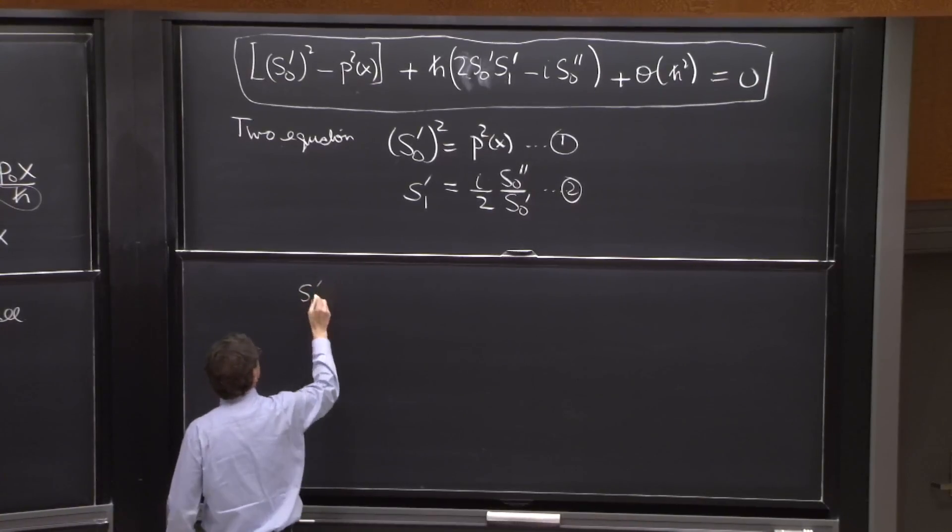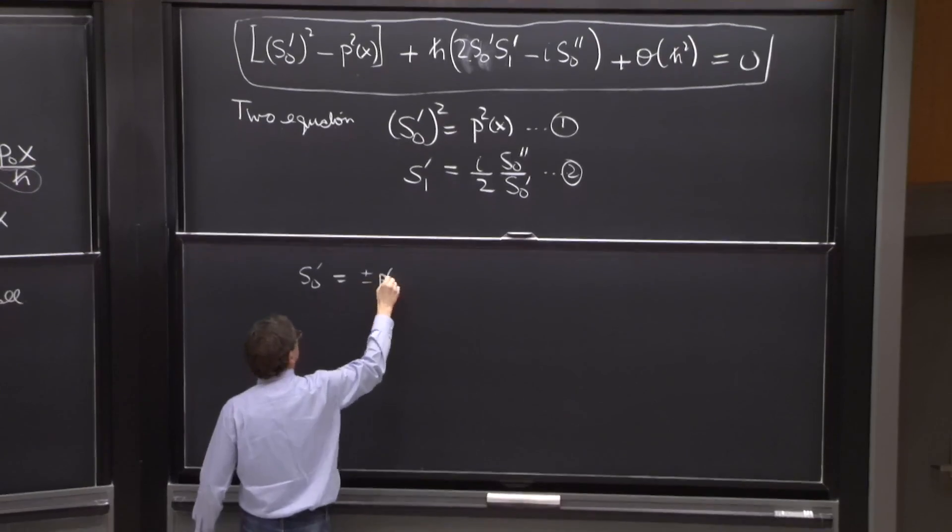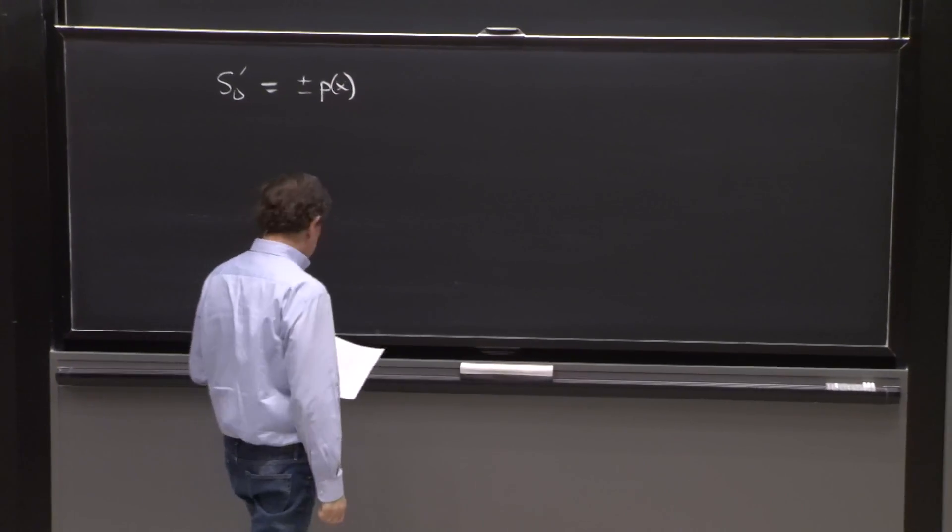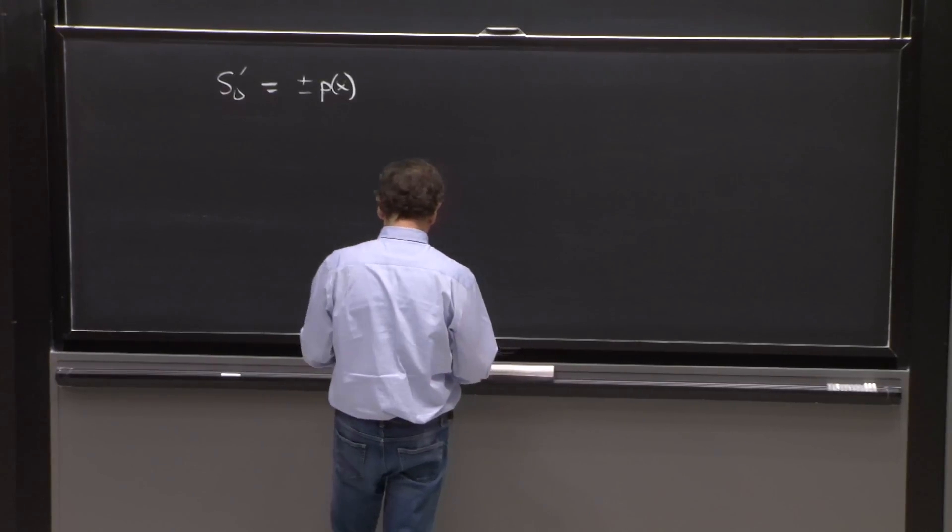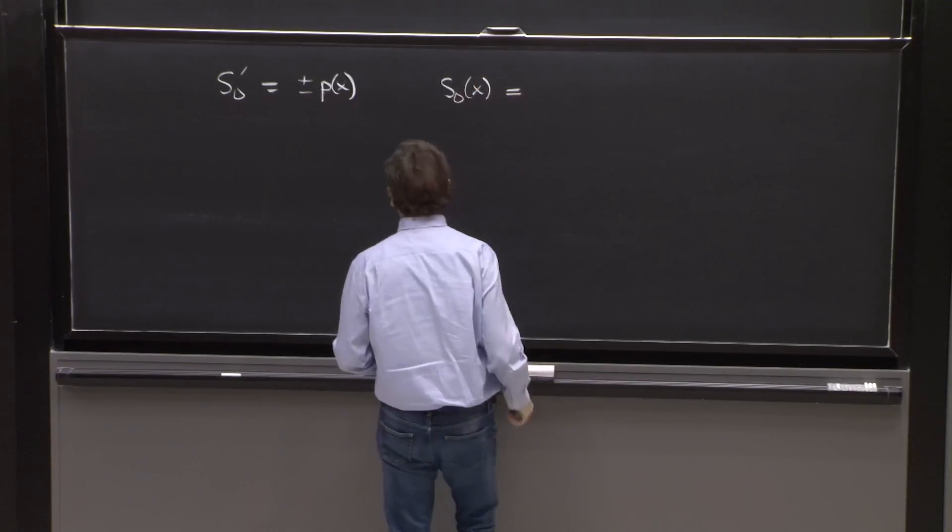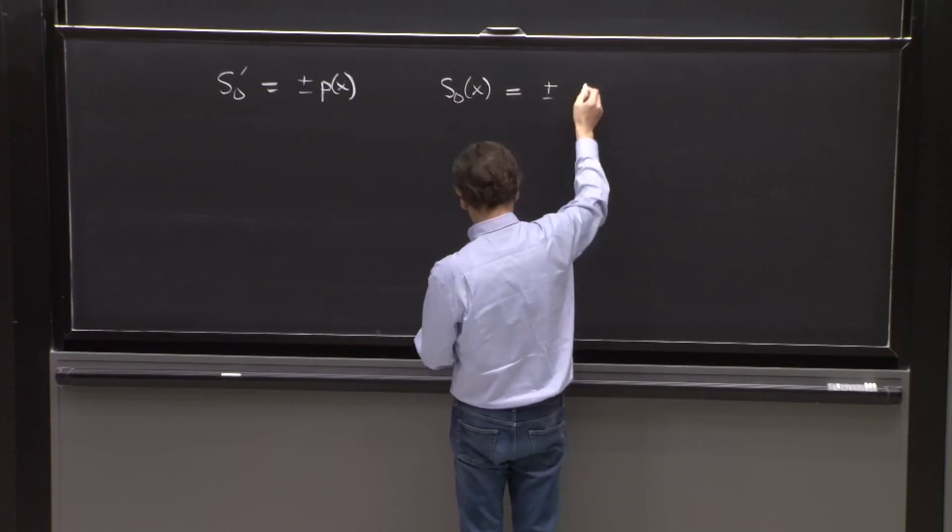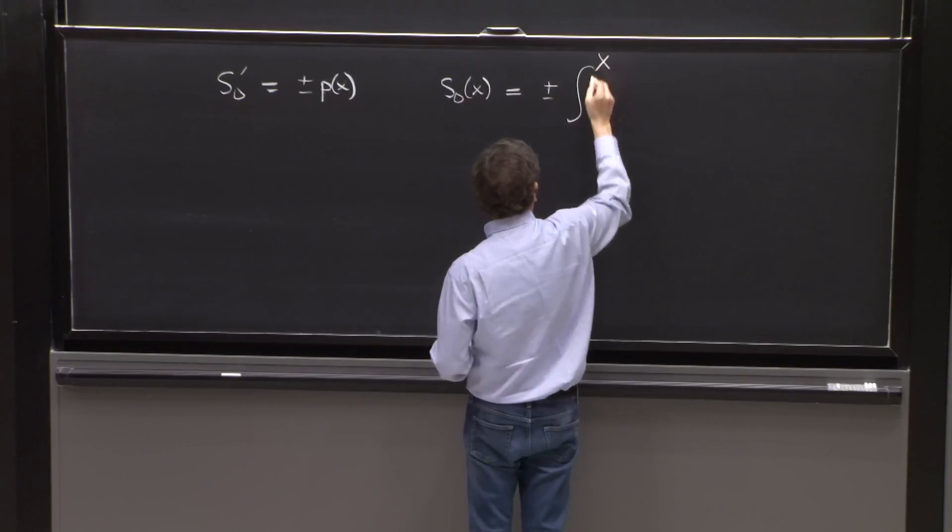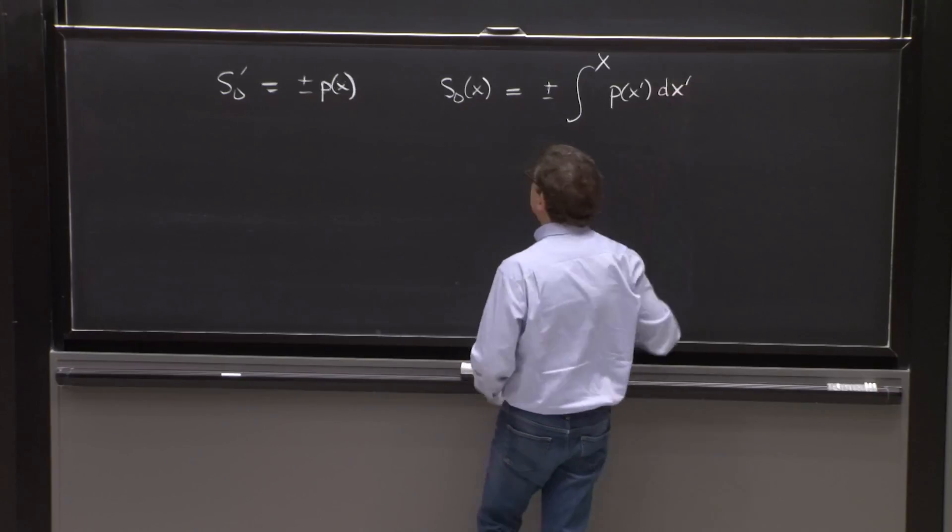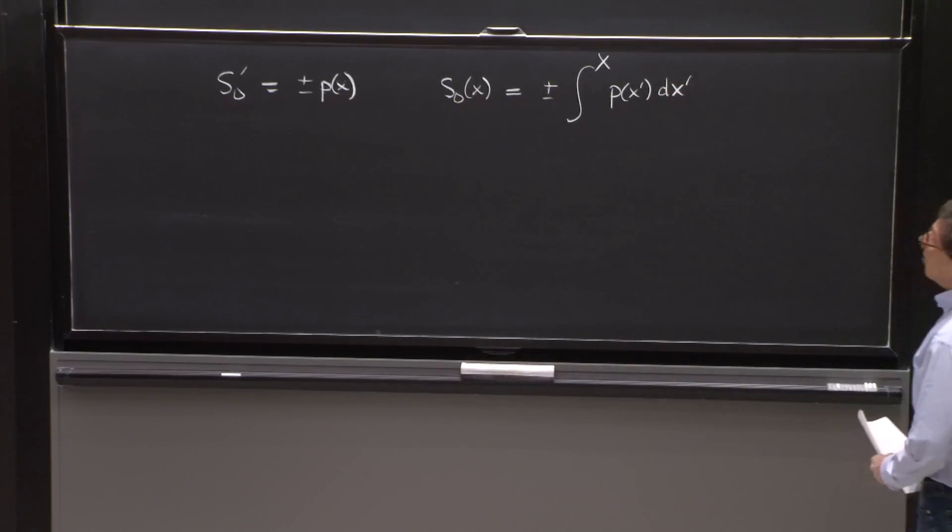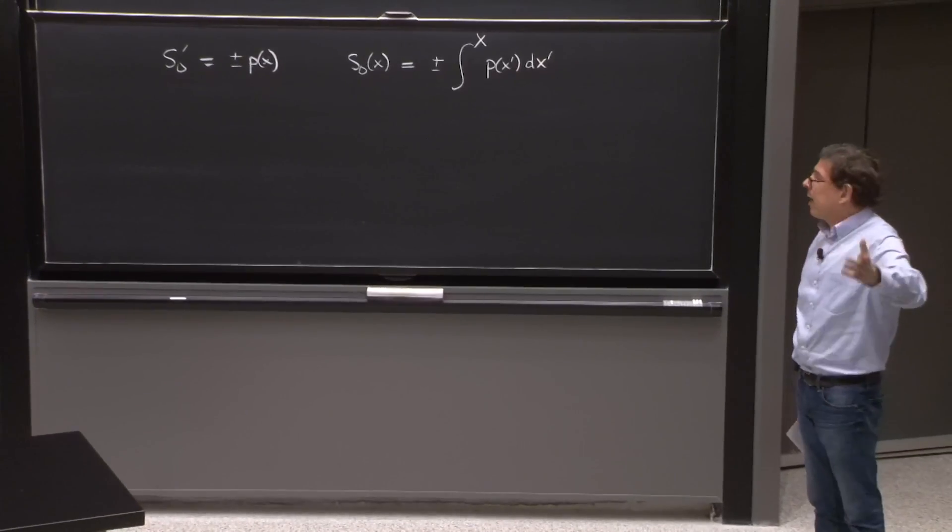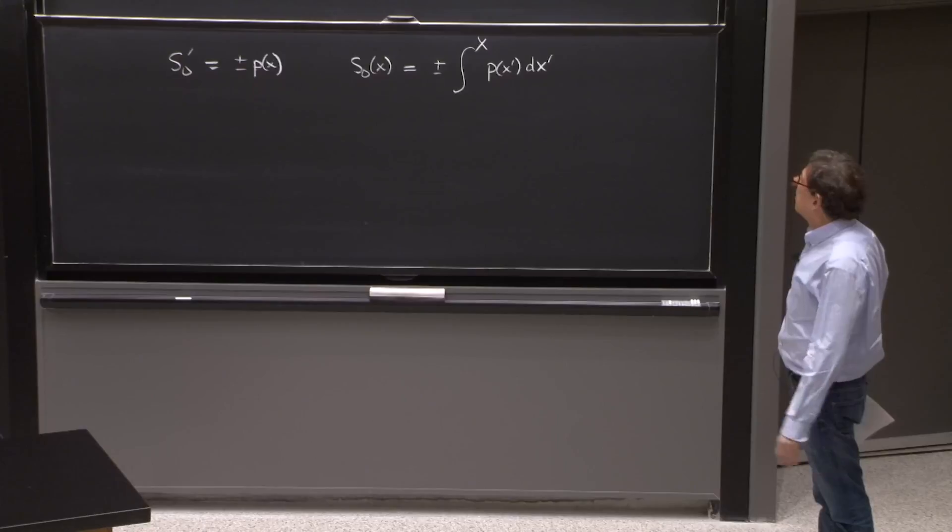S0 prime is equal to plus minus p of x. And therefore, S0 of x is equal to plus minus the integral up to x of p of x prime dx prime. You see, p of x is pretty much known. If you know the energy of your particle, then it's completely known.